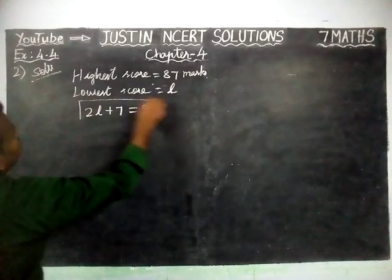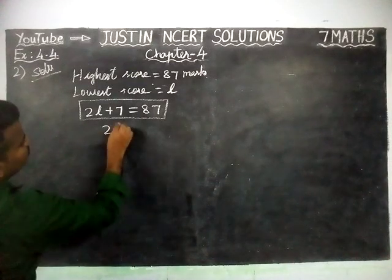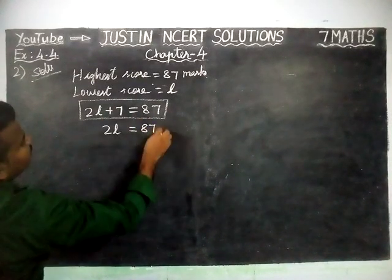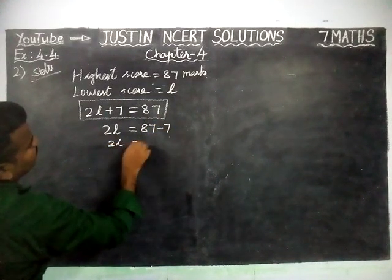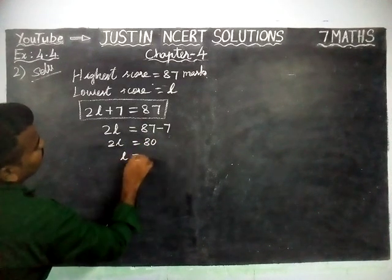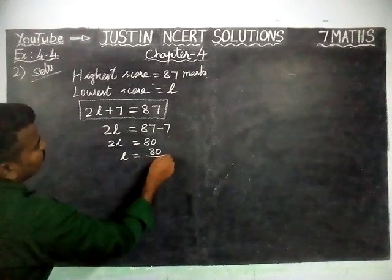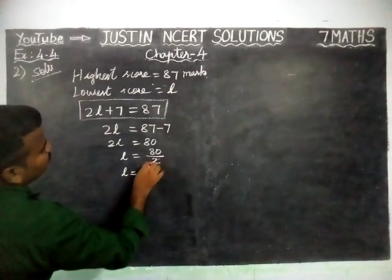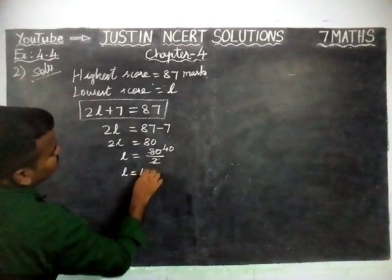Now by using this equation, we are going to find the answer. 2L is equal to 87 minus 7. This plus is going to the right-hand side, so it will become minus. 2L equals 87 minus 7, which equals 80. L equals 80 divided by 2, so L is equal to 40.